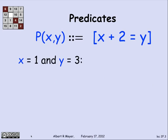Now, in order to figure out whether or not a predicate is true, I need to know the values of the variables, in this case x and y. So if I tell you that x is 1 and that y is 3, guess what? P of 1 and 3, P of x and y when x is 1 and y is 3 is true, because in fact, 1 plus 2 is equal to 3.